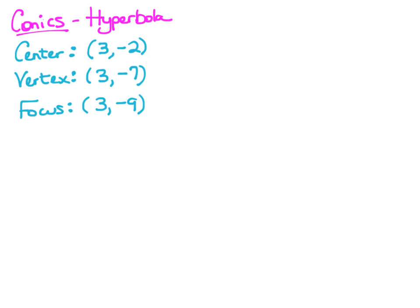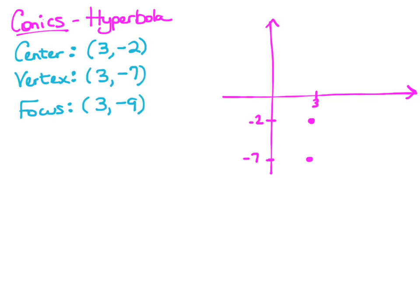The last example is a hyperbola. We have a center at (3, -2), a vertex at (3, -7), and a focus at (3, -9). Based on that information, I can see that this hyperbola is going to open up and down. We have the a value, which is the distance from the center to a vertex, and the c value, which is the distance from the center to the focus. But we need the b value to complete our equation for the hyperbola.